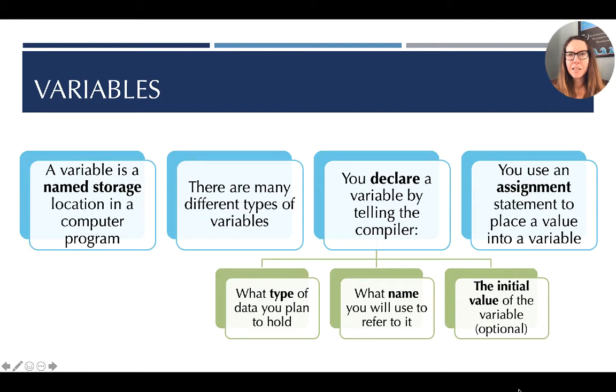A variable is just a named storage location in a computer program. It's a place that we're going to hold information. There are many different types of variables. To declare one, first you have to tell it what type of data you plan to store. What name do you wish to refer to this piece of information? And what is the initial value that you want to hold? That's optional. You use something called an assignment statement to put a value into a variable.